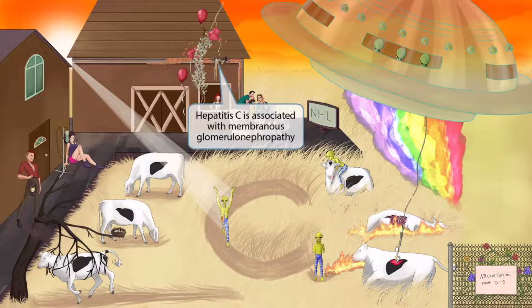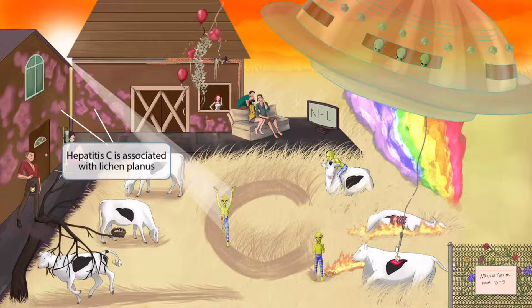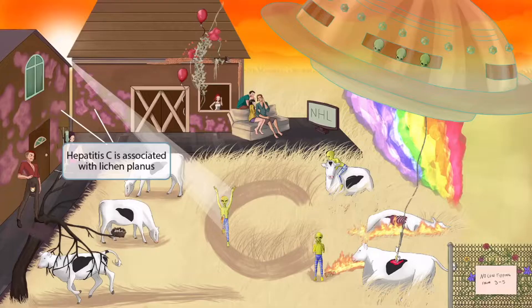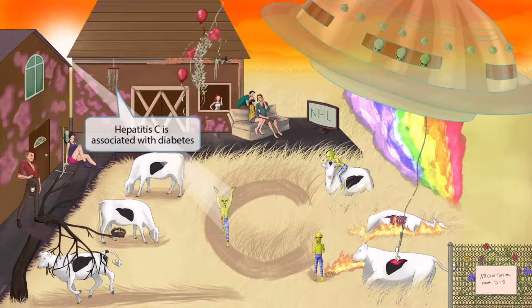The property owner hired those hooligans on the sofa to paint his house and barn, but they got distracted with the NHL game on TV and just splotched red randomly across the wall. This strange pattern represents the appearance of lichen planus, a skin condition that patients with hepatitis C often develop — you can see it causes a unique splotchy appearance. There are also dyed beads hanging from a wind chime, representing diabetes, another pathology associated with hepatitis C.